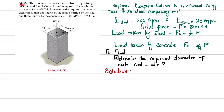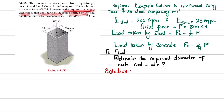Welcome back. Problem 4-32. The statement is: the column is constructed from high-strength concrete and four A36 steel reinforcing rods. If it is subjected to an axial force of 800 kN, determine the required diameter of each rod so that one fourth of the load is carried by the steel and three fourths by the concrete.